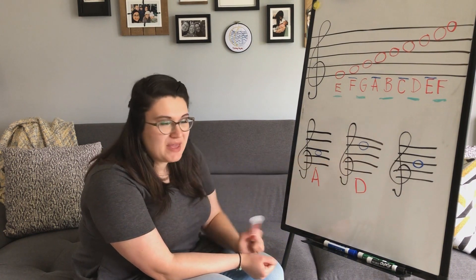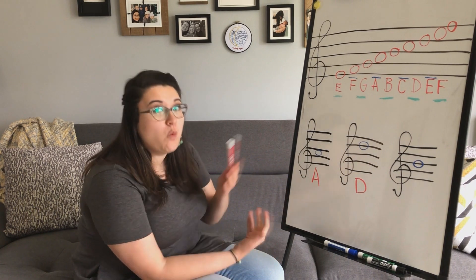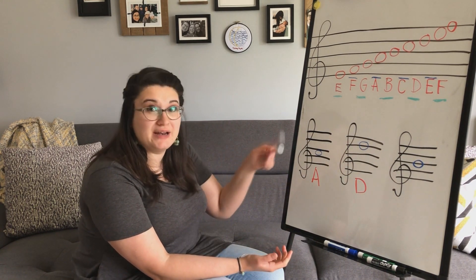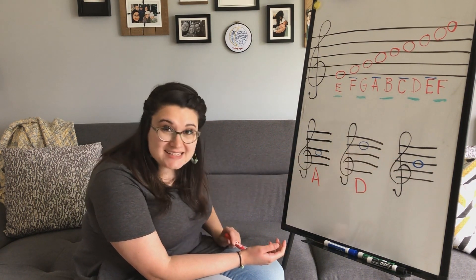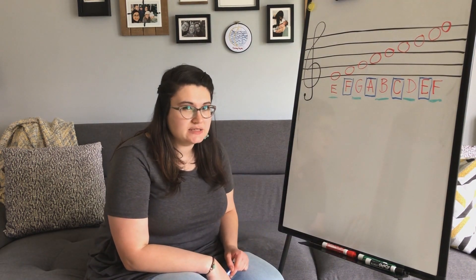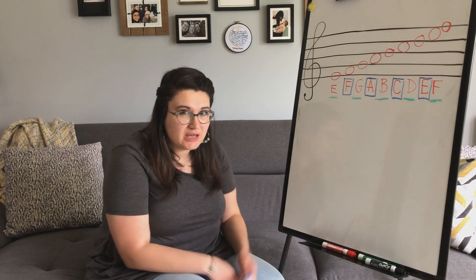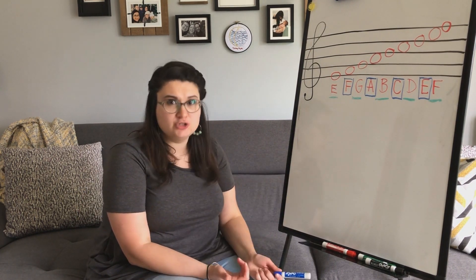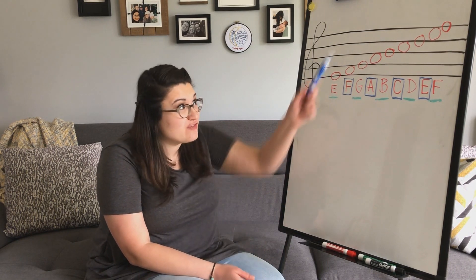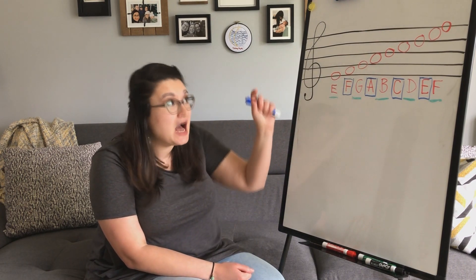Last one. Is that pitch on a line or in a space? On a line — it has the line going through the middle of it. What's our saying for lines? Every Good Boy Does Fine. Start at the bottom: Every Good Boy — that is a B. All right, last but not least. Our very top line is an F. Could we keep going up in pitch? Can music keep going up in pitch? Of course it can. What letter comes after the letter F? G. So to write the G on our staff, we're going to put the G right next to the F, right above it, above that top line. There's our G.